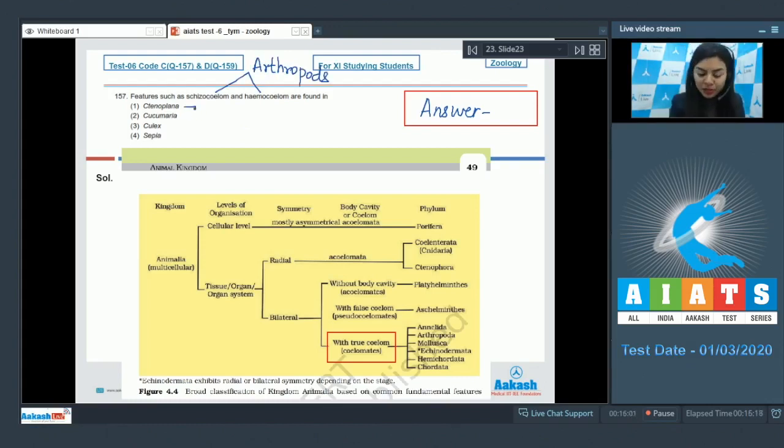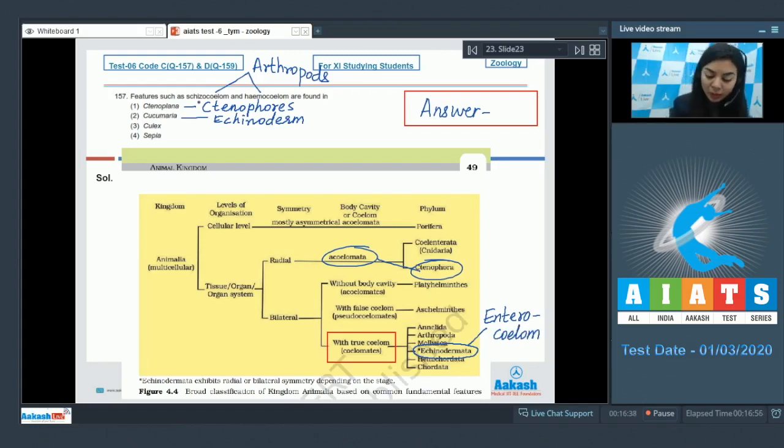Let's look at the options. Tenoplana is a ctenophore, and ctenophores are acoelomates. They do not show the presence of coelom or body cavity, so this is incorrect. Cucumeria, also known as sea cucumber, is an echinoderm. Echinoderms show true coelom, but among true coeloms, enterocoel type of coelom is seen in echinoderms, not schizocoel. So this is also incorrect.